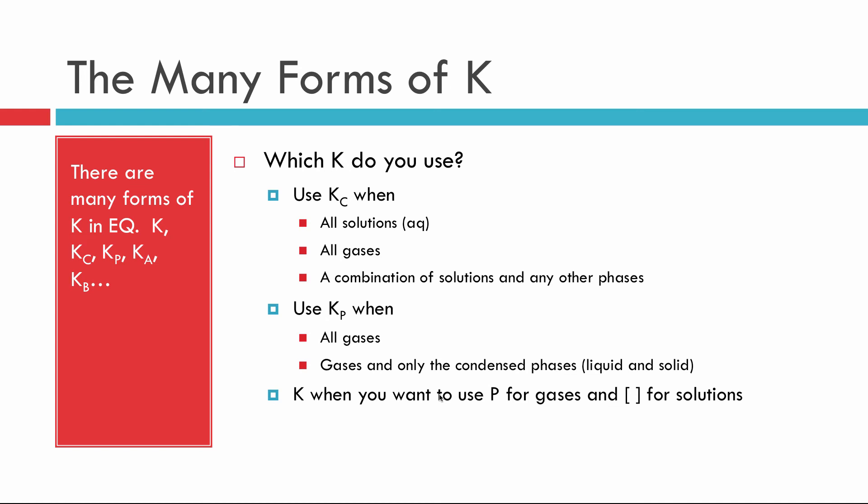If you have something that's aqueous, you can't use K sub P. And finally, if you have some kind of mixture where you have pressures and gases and solutions and stuff, you can always use just a simple K. And a simple K puts gases as pressures, solutions as concentrations, and ignores the liquids and solids.